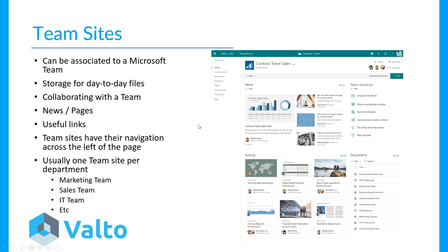Team sites have their navigation across the left-hand side, which is a quick way of telling them apart from communication sites, which have navigation across the top. Team sites can have useful links, pages, and news articles that roll up onto the hub site. Usually there's one team site per department — things like marketing, sales, IT, finance, and HR would all have their own team sites for their day-to-day collaboration purposes.